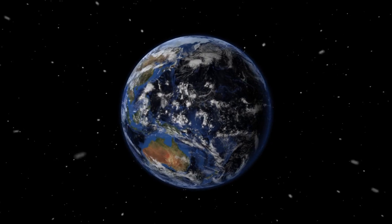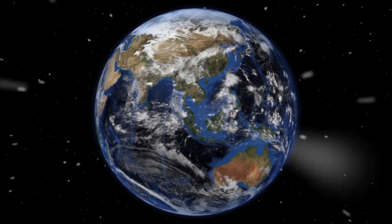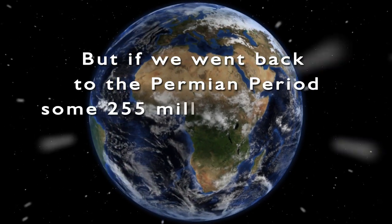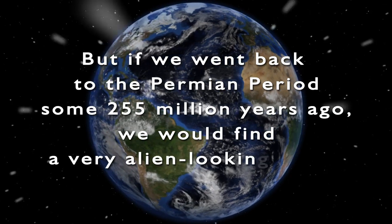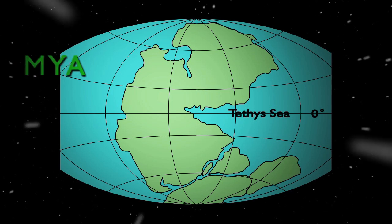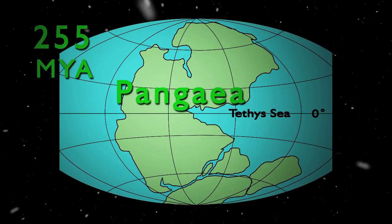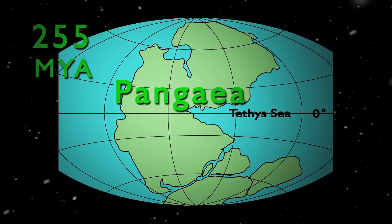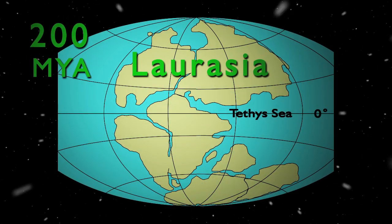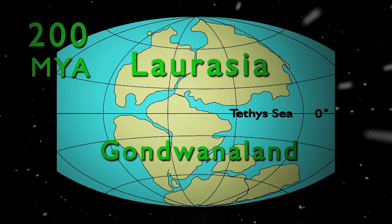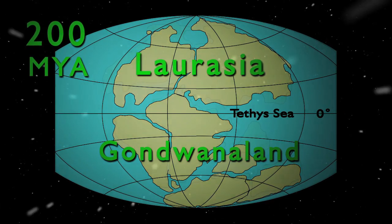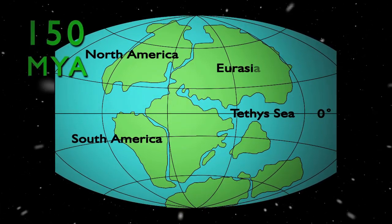Everyone is familiar with the look and appearance of our Earth today from maps, globes, and photos of our planet from space. But if we went back to the Permian period, some 255 million years ago, we would find a very alien-looking Earth. All of the continental masses that exist today were grouped together into a supercontinent which we now call Pangaea. Slowly, over the eons, plate tectonics and continental drift reshaped our world. By 200 million years in the past, Pangaea had broken up into two continental groups which geologists call Laurasia and Gondwanaland. By the 150 million year mark, we would see land masses that could be recognized as precursors to the continents we know today.